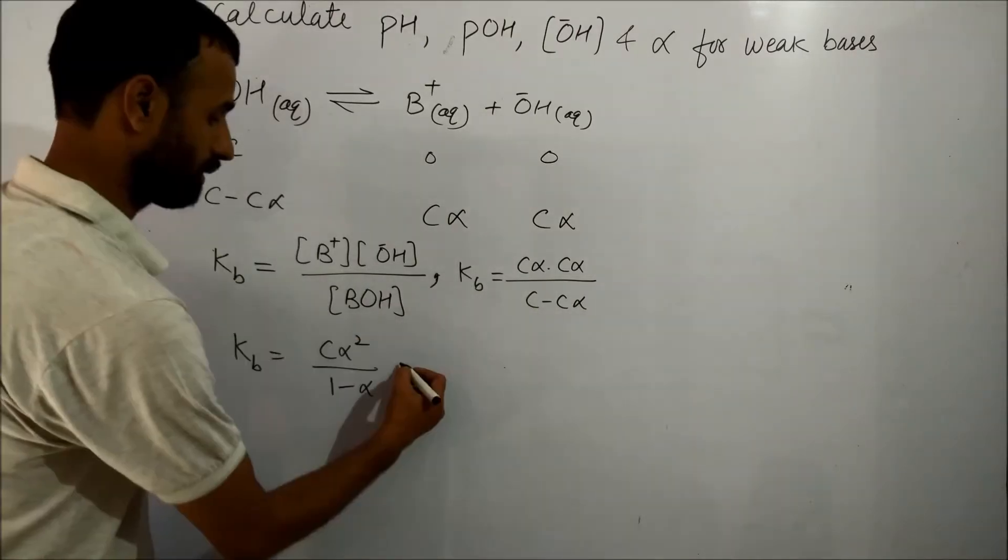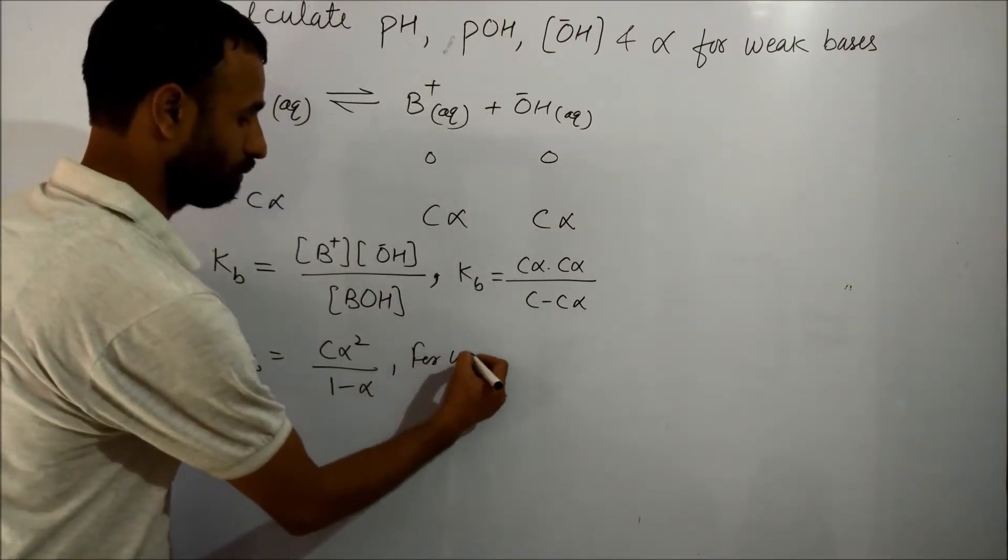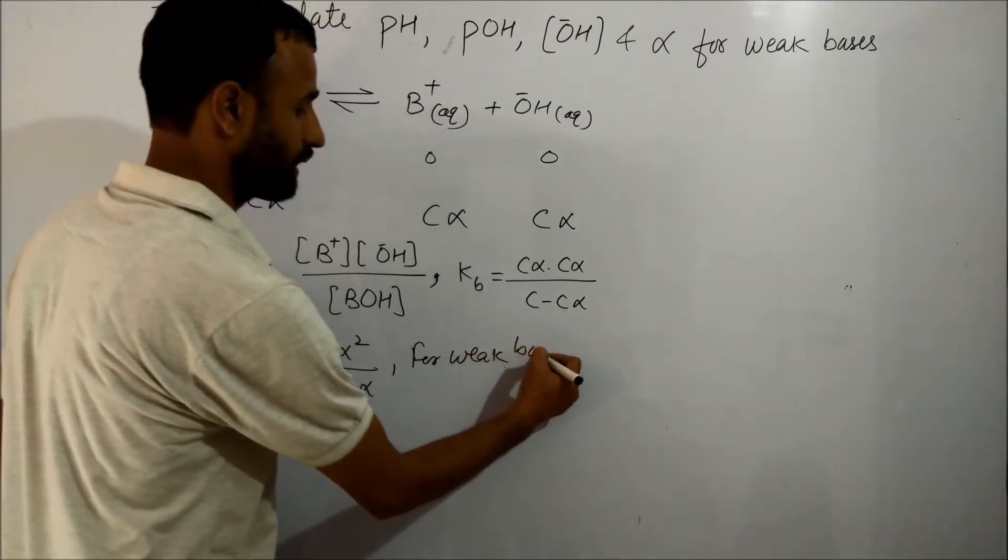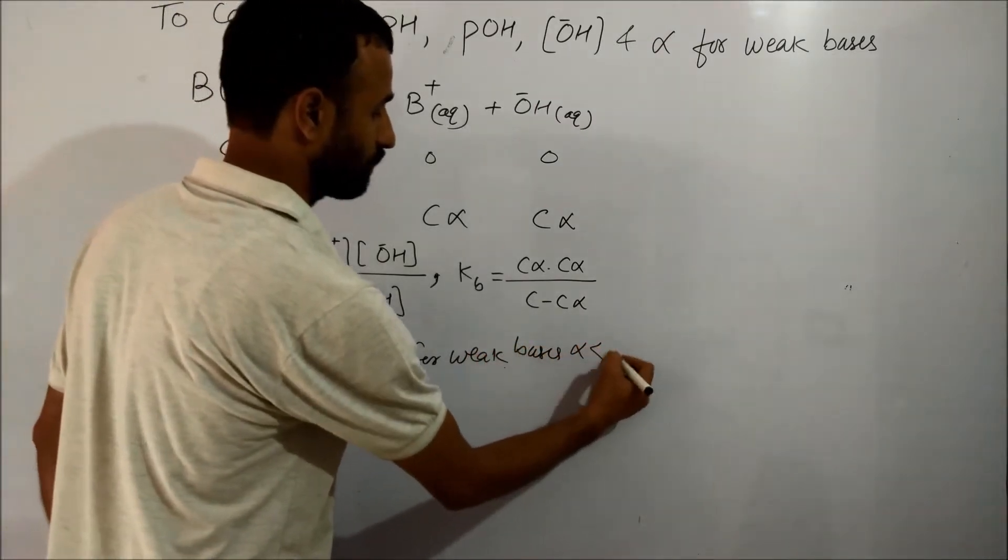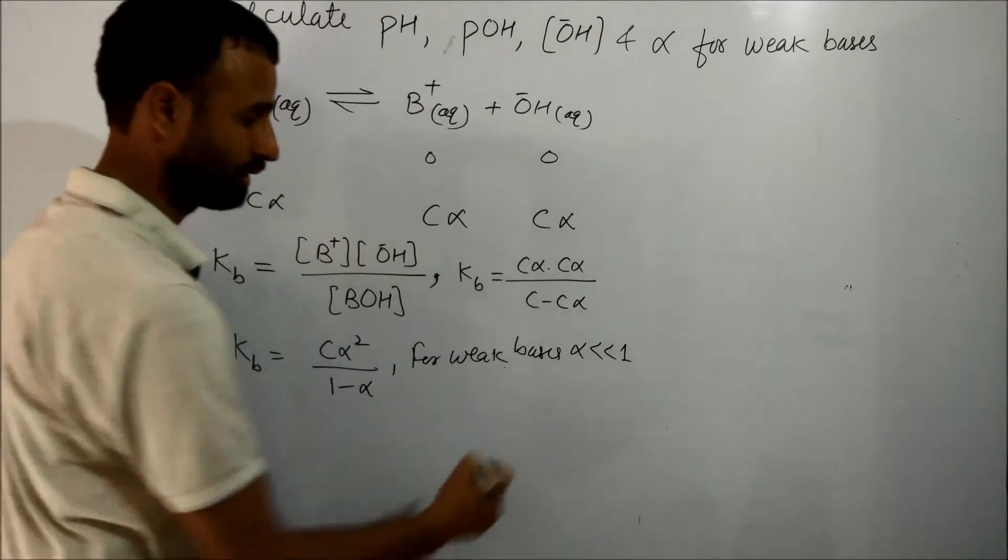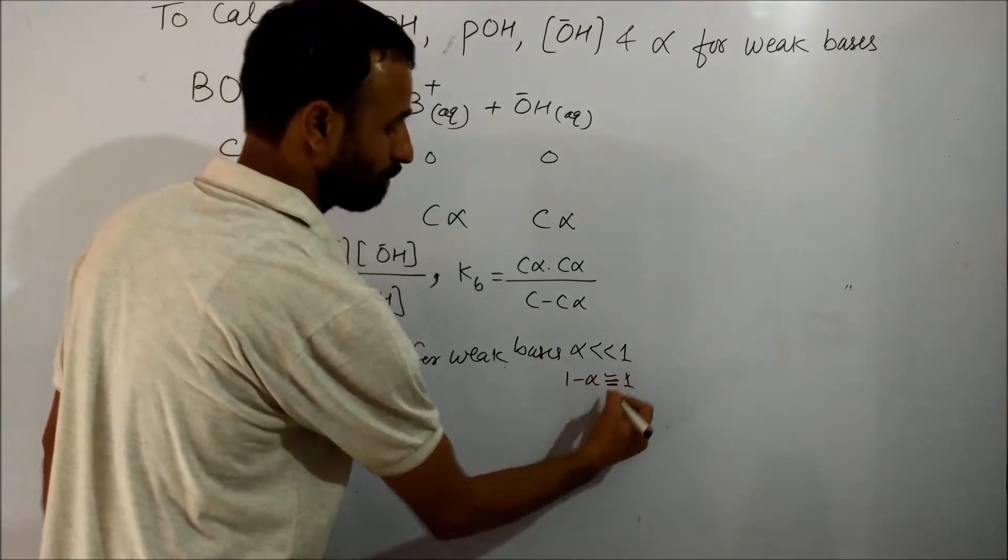C is common, and for weak bases, alpha is very, very less than 1. One minus alpha is approximately 1.